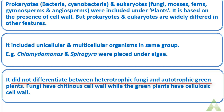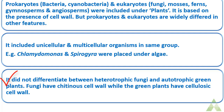Sometimes the cell wall is made up of chitinous material, as in fungi, while in plant cells it is made up of cellulose. This system did not distinguish between eukaryotes and prokaryotes, unicellular and multicellular organisms, or photosynthetic and non-photosynthetic organisms. That's why this classification system was discarded.